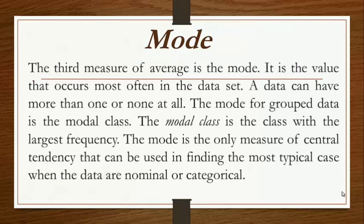Let's talk about mode. It is the value that occurs most often in the data set. A data set can have more than one mode or none at all. The mode for grouped data is the modal class — the class with the largest frequency. The mode is the only measure of central tendency that can be used when the data are nominal or categorical.